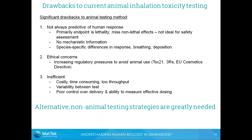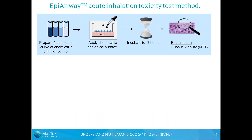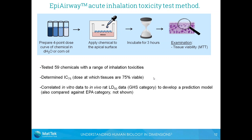There is therefore a great need to develop alternative non-animal testing strategies for acute inhalation toxicity. Our goal was to use the EpiAirway model to develop an alternative in vitro toxicity test. The method we developed was to take a chemical of interest, prepare a four-point dose curve in water or corn oil, apply it onto the apical surface of the tissue, incubate for three hours, and then examine tissue viability using the MTT assay.